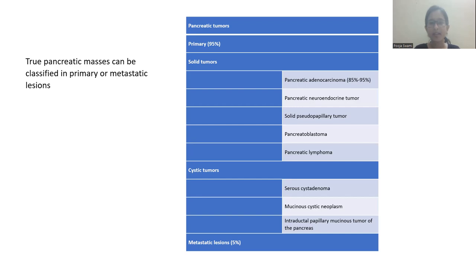Solid tumors include pancreatic adenocarcinoma, pancreatic neuroendocrine tumor, solid pseudopapillary tumor, pancreatoblastoma, and pancreatic lymphoma. Cystic lesions include serous cystadenoma, mucinous cystic neoplasm, and intraductal papillary mucinous tumor of the pancreas.